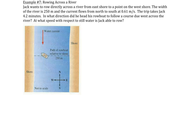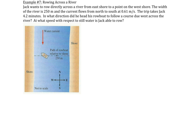Welcome to example number seven, which involves a boat rowing across a river. Jack is rowing a boat across the river, and he points his boat at some angle in the northwesterly direction, such that his boat will continue to move relative to the shore in the due west direction. The water speed is given as 0.61 meters per second going directly south, and it takes Jack 4.2 minutes to cover the distance directly across of 250 meters.